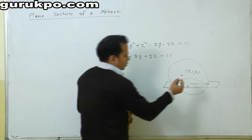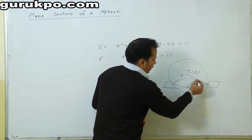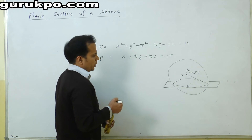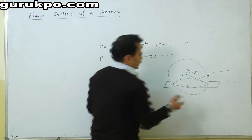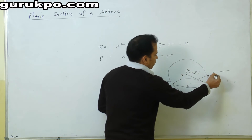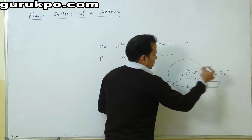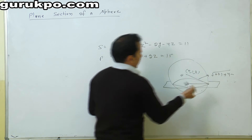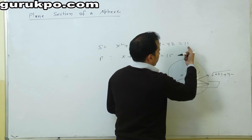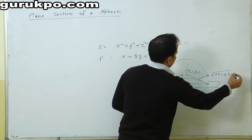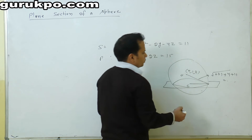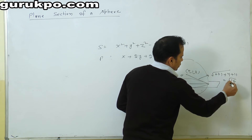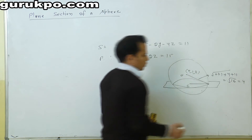The radius of the sphere is √(u² + v² + w² − d). Here d = −11, so the radius equals √(0 + 1 + 4 + 11) = √16 = 4.